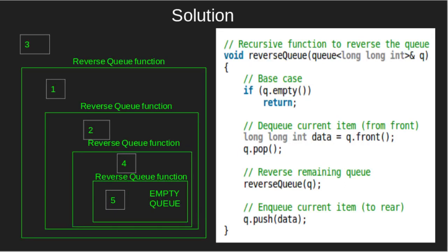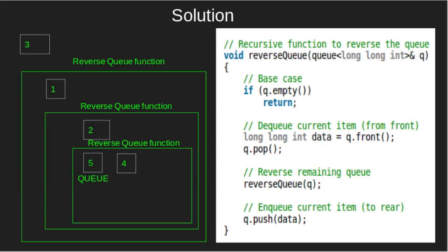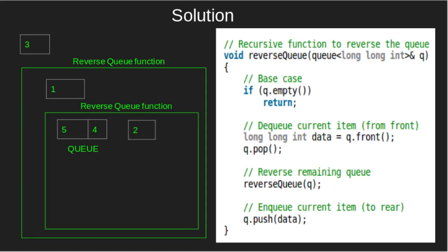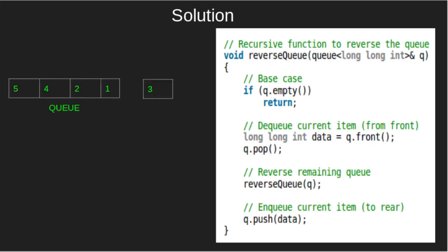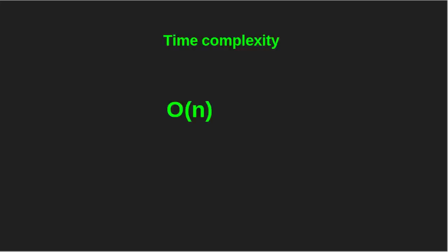Now, we'll enqueue 5 to the resultant queue we got from the reverse queue function. Now, we'll return from the queue function. We'll enqueue 4 to the resultant queue we got from the reverse queue function, then return from the function. Again, we'll enqueue 1 to the resultant queue we got from the reverse queue function, and return. Finally, we'll enqueue 3 to the resultant queue we got from the reverse queue function. Thus, we got our desired output. Time complexity is O(N).